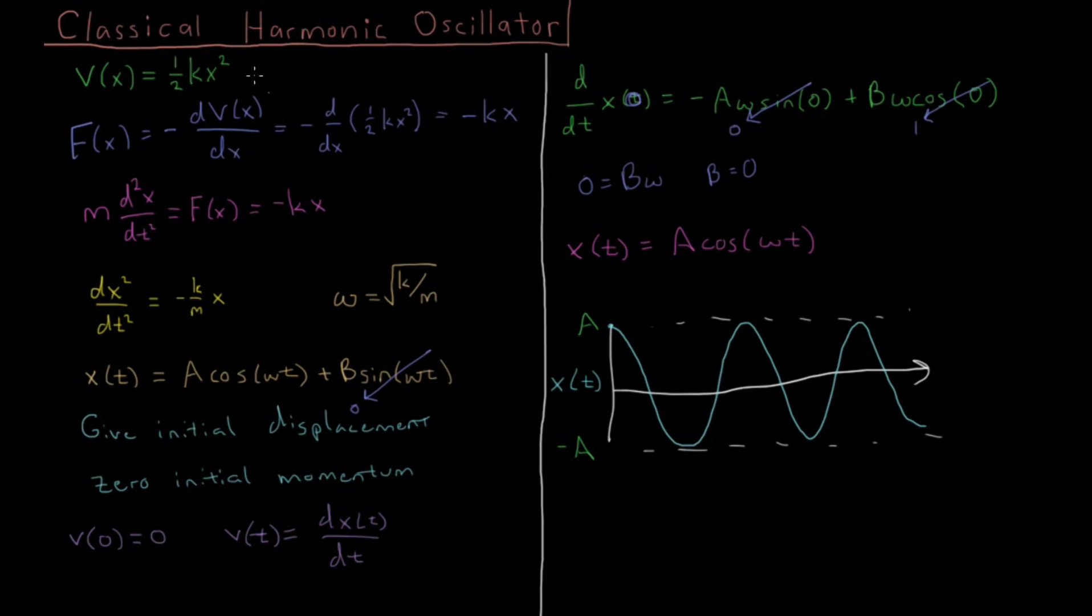So solving for the classical harmonic oscillator, given some initial displacement A and zero initial momentum, this is the solution. We get an oscillatory cosine term with time. This is indeed a model for vibrations, because things that vibrate will just go back and forth, and we'll see what the energy looks like over time in the next video.